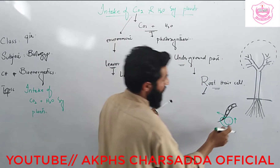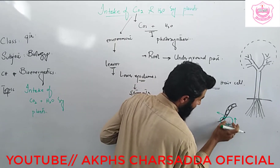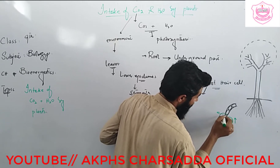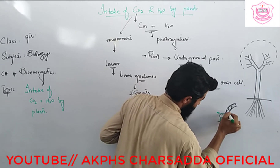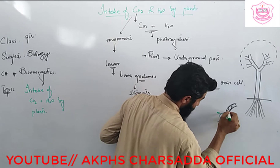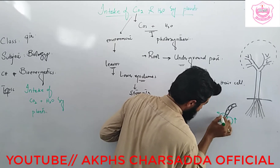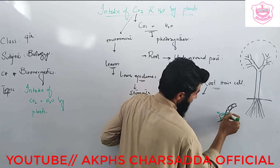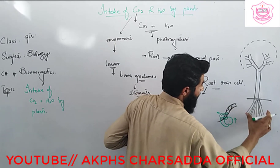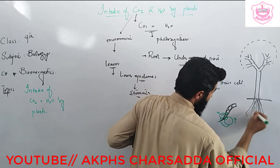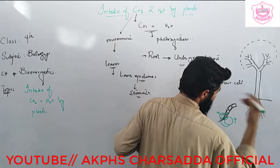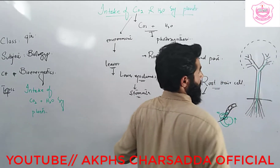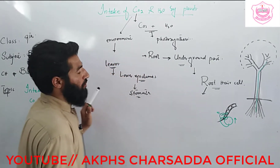When water moves from the soil particle toward the root hair cell, the concentration of water inside that root hair cell increases compared to the next cell. Due to this, water moves from one cell to the next cell, making a continuous path. The water moves upward through the stem and reaches the leaves.